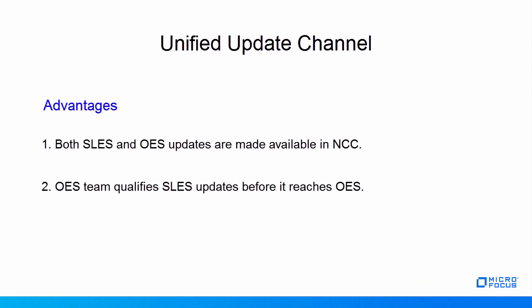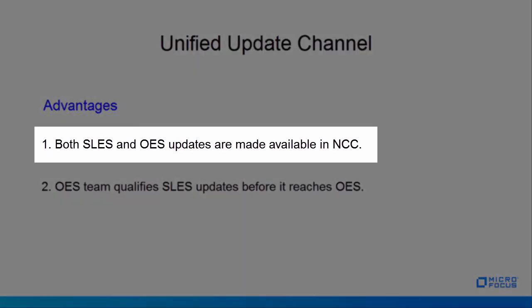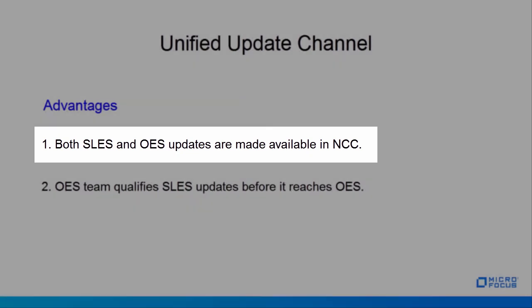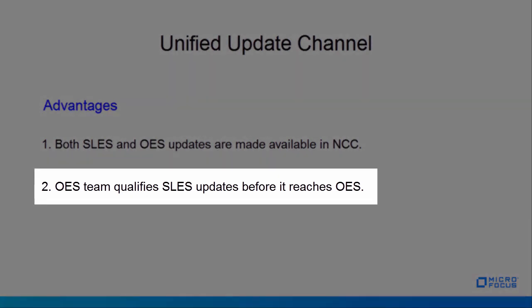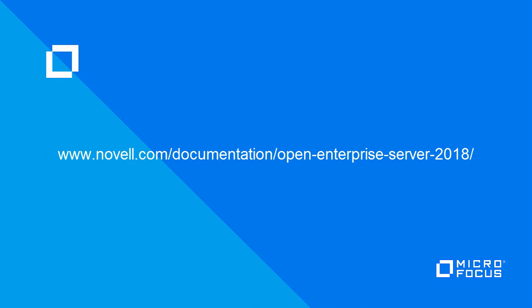Let's see the advantages of Unified Update Channel. As discussed earlier, customers had to deal with two customer centers. With Unified Update Channel, both SLES and OES updates are made available in NCC. SLES updates typically used to land on OES systems without proper validation from the OES QA team. With OES 2018 Unified Update Channel, all updates including SLES updates are qualified by the OES QA team before they are made available. For more information on install and deployment changes in OES 2018, refer to www.novell.com/documentation/open-enterprise-server-2018.